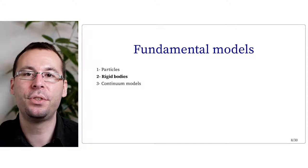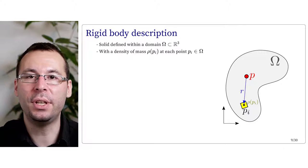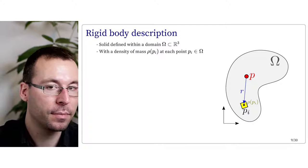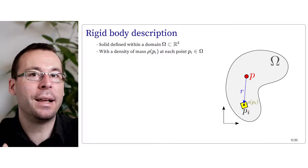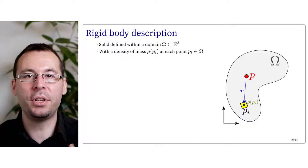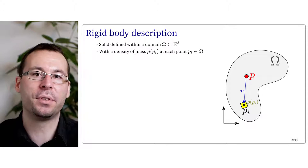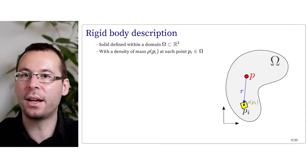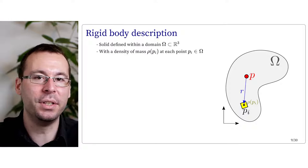We reach the second fundamental model, which is rigid bodies. A rigid body is a solid that can be defined as a domain omega of R3. Each point of this solid Pi can have a local density of mass rho at Pi. The whole point of rigid body simulation is to avoid dealing directly with all the points Pi and their local density of mass, but to have simpler integral quantities that can fully describe its behavior as a single entity.